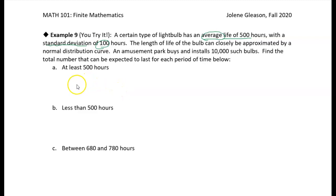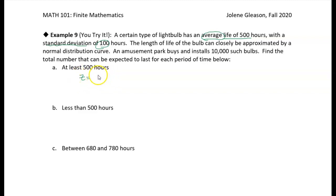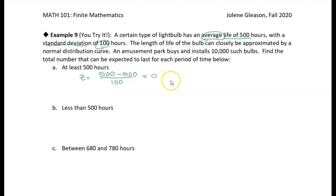This first one: what's the probability of a light bulb lasting at least 500 hours? Let's calculate the z-score. The average was 500 hours, so 500 minus 500 over the standard deviation of 100 gives us a z-score of zero.